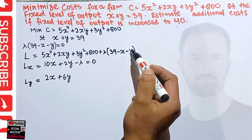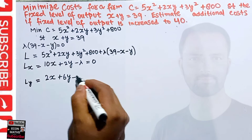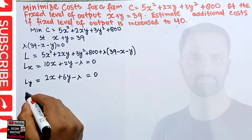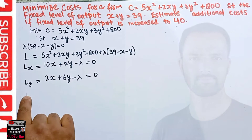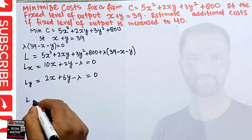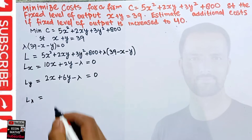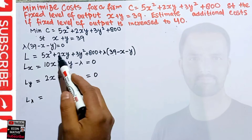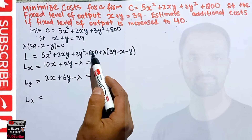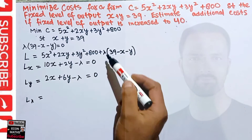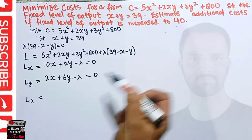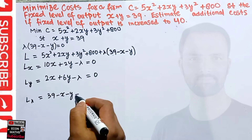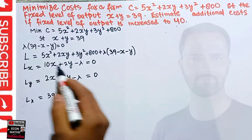After that, we take the derivative with respect to lambda. Since lambda is not involved in the first, second, third, or fourth terms, their derivatives are zero. The derivative of λ(39 − x − y) with respect to λ gives (39 − x − y). Setting this equal to zero gives us the third equation: 39 − x − y = 0.